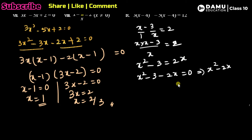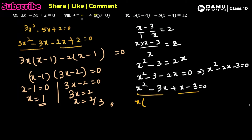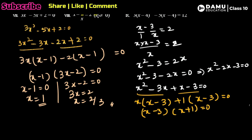We can write x² - 2x - 3 = 0. To factor, use 3 and 1: 3 × 1 = 3 and 3 - 1 = 2. Write x² - 3x + x - 3 = 0. Grouping: take common x from the first group giving x(x - 3), and take common 1 from the second group giving +1(x - 3). So x - 3 is a common factor.